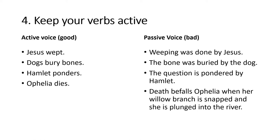Guideline 4: Keep your verbs active. Verbs in English have two voices: the active voice and the passive voice. Active verbs are verbs that do things — Jesus wept, dogs bury bones, Hamlet ponders or notices, Ophelia dies. Passive verbs are constructions where the subject is sidelined and replaced with a state of being: 'Weeping was done by Jesus,' 'The bone was buried by the dog,' 'The question is pondered by Hamlet,' 'It was noticed by Hamlet that Polonius was moving behind the tapestry,' 'Death befell Ophelia when her willow branch was snapped and she was plunged into the river.' In each of these cases, the directness and dynamism of the active example is watered down by the passive construction.